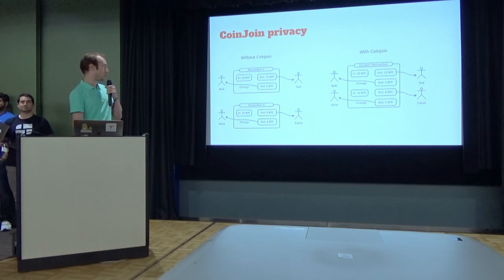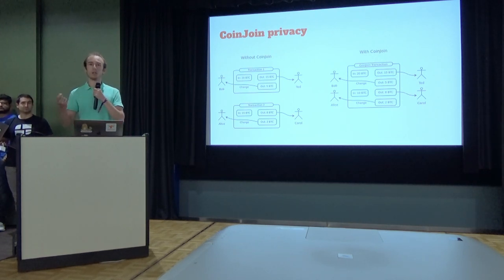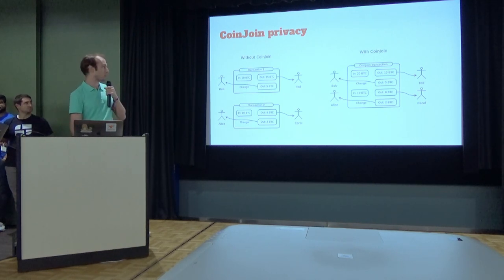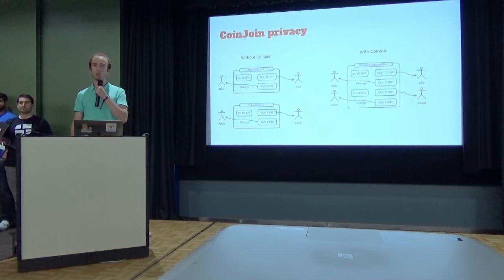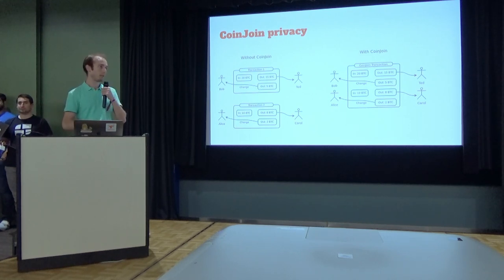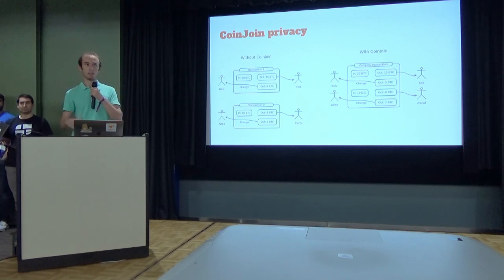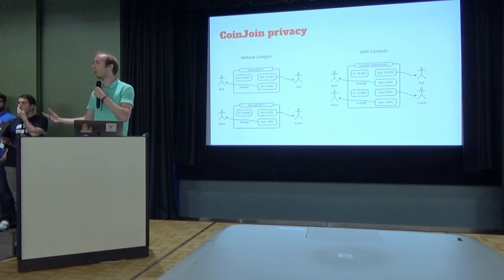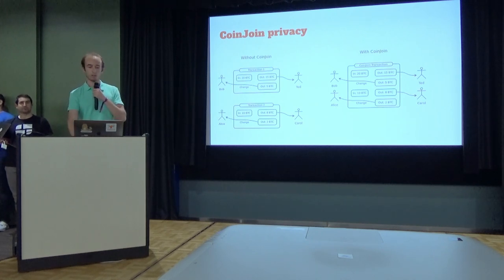CoinJoin is basically where instead of two people doing two different transactions, they come together to help each other be anonymous and merge into one single transaction. For example, if Ivan is a drug dealer and Bob and Alice use CoinJoin, it's impossible to know whether Alice or Bob paid the drug dealer — they give each other plausible deniability. The problem is your anonymity set is very low, maybe five people doing the CoinJoin, so it's not quite good enough.